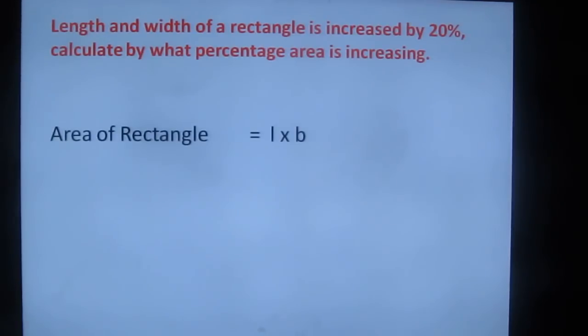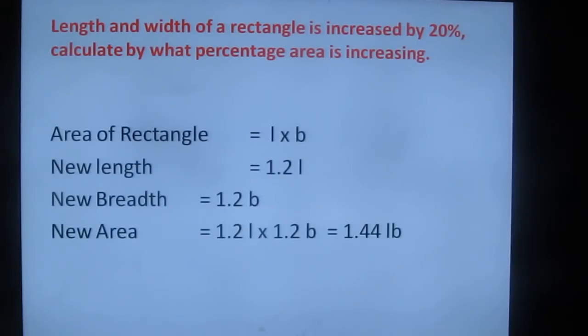Let's see this. What is the area of a rectangle? Length into breadth. What is the new length? 1.2L, as I said 20% increasing. New breadth: 1.2B. New area will be 1.2L into 1.2B. So the answer is 1.44LB.